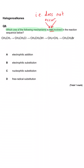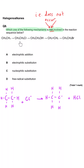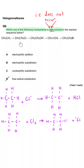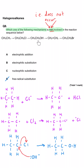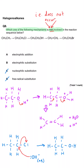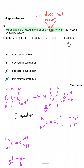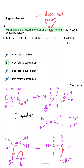Which mechanism is not involved in the reaction sequence shown? Ethane is converted to chloroethane by free radical substitution using chlorine and UV light — so D is included. The halogenoalkane is turned into an alcohol by nucleophilic substitution using aqueous sodium hydroxide — so C is included. The alcohol is converted to an alkene by elimination. The alkene reacts with HBr to make a halogenoalkane by electrophilic addition — so A is included. That leaves B as the answer: it is not involved.